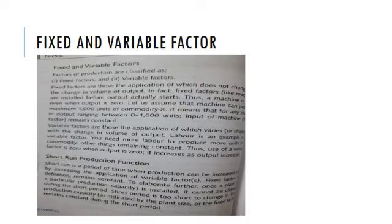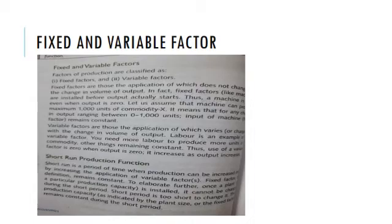Long period, on the other hand, is a period of time when the distinction between fixed and variable factors comes to an end — all factors become variable. Long period is long enough to increase the production capacity of a firm. For example, in the long period we can increase the amount of machines along with units of labour. If we start with one labour and one machine, then increase labour from 1 to 2 and machines from 1 to 2, the factor ratio remains constant. That is why the long run production function is called constant proportion type production function.